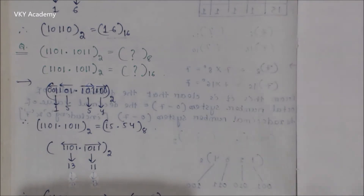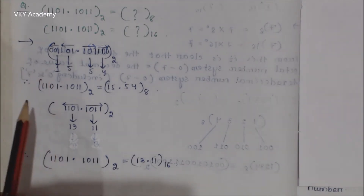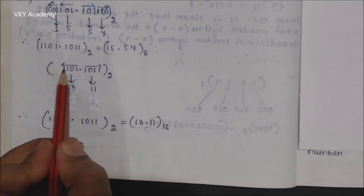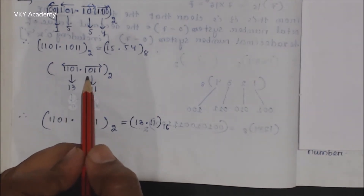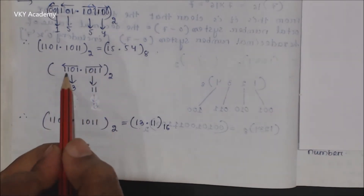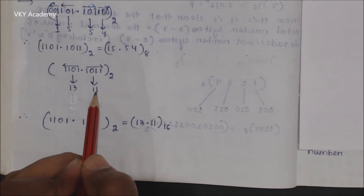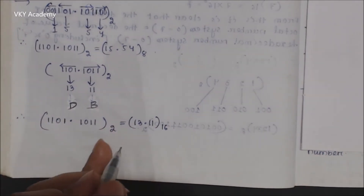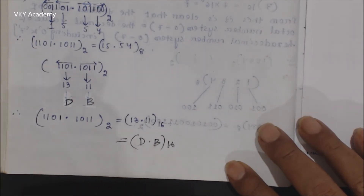Now let us convert the same binary number into hexadecimal. For hexadecimal we take groups of 4 bits. For the whole number part from LSB to MSB the group is 1011 and for the fractional part from left to right the group is 1011. The equivalent hexadecimal for 1101 is 13, represented by D, and for 1011 is 11, represented by B. So the hexadecimal number is D.B.